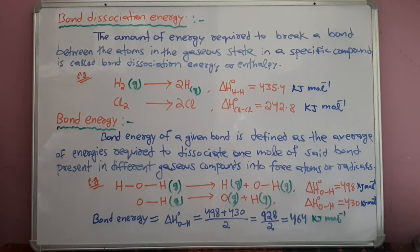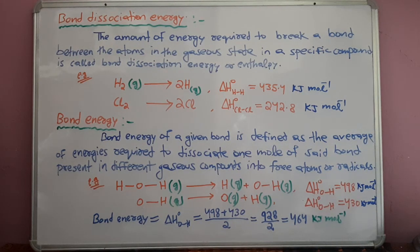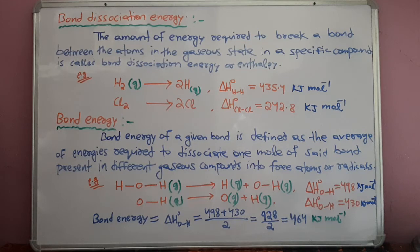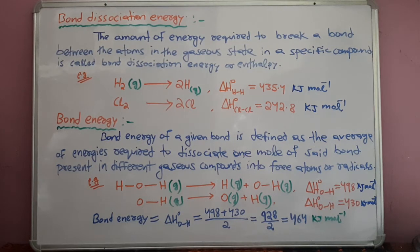The word average in the definition of bond energy is used because the bond energy of a particular bond is not the same when present in different compounds.